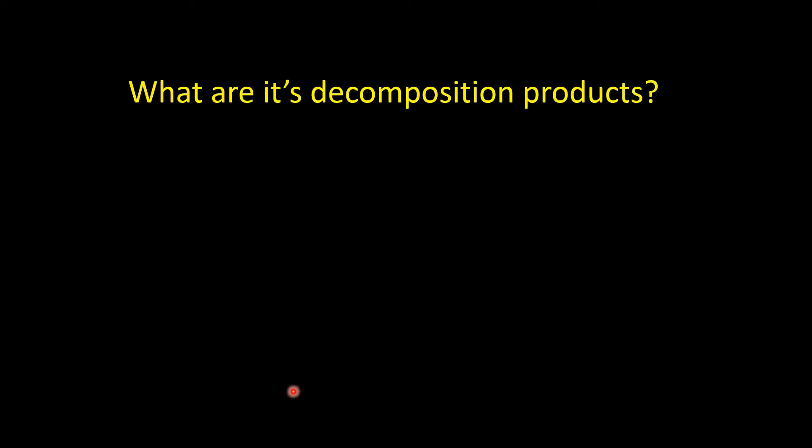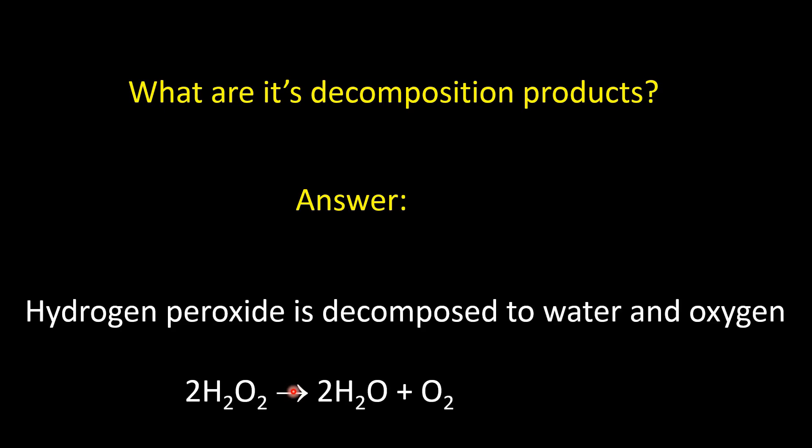Second question: what are its decomposition products? The answer is oxygen and water. Hydrogen peroxide decomposes to water and oxygen. If you keep hydrogen peroxide for some time, you will find that its strength decreases because of this decomposition. In the presence of a catalyst like ferric chloride, the decomposition reaction gets faster.